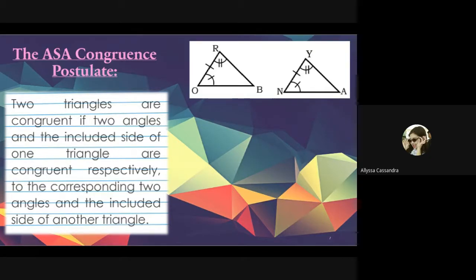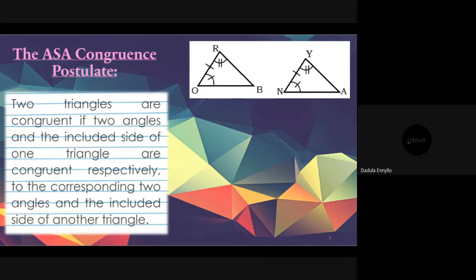Given triangle ROB and triangle YNA. Can you give the first congruent part? Dadula answers: angle O is congruent to angle N. Next, how about the included side? We are done with the angle.